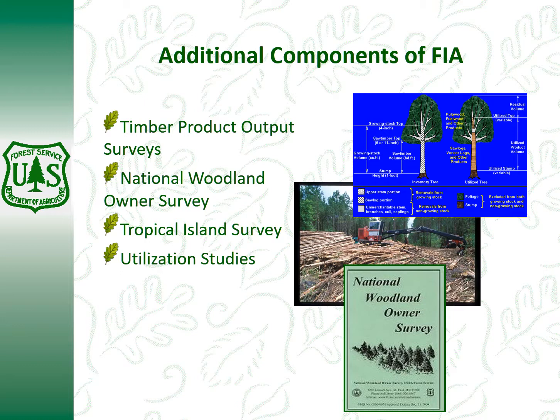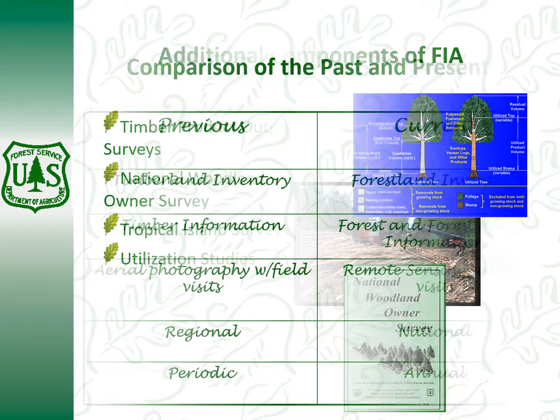There are also utilization studies — some really fascinating ones that take place. That picture in blue on the right is showing how a tree tends to be utilized across the state. From those studies we've learned a lot about hardwoods versus softwoods. On a softwood they'll utilize up to about 80% or 90% of the stem, while on a hardwood probably about 50% of that stem gets left in the woods because it has no commercial value.